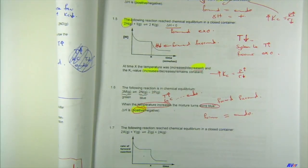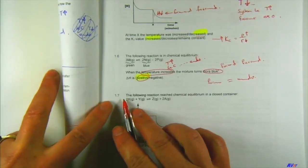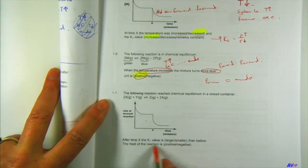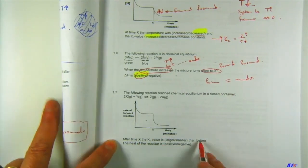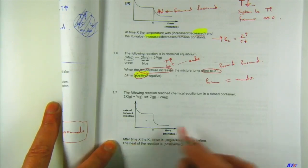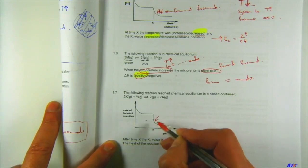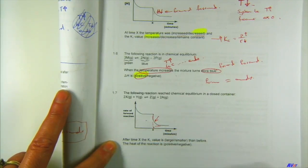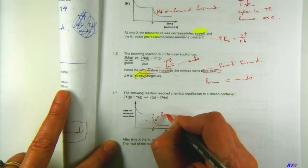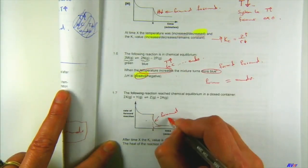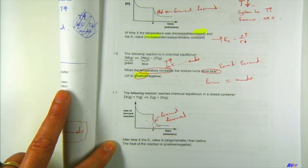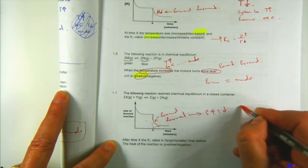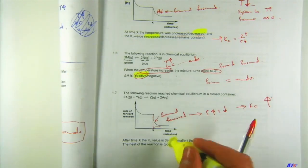Very last one — they gave us rate graphs and ask whether Kc is smaller or bigger after time x. After time x, which reaction is favored? If I draw in the other reaction, it would be lower, which tells me the forward is the one with the bigger rate — forward is favored. If forward is favored, products increase and reactants decrease, so Kc will be bigger — the first answer was 'larger.'